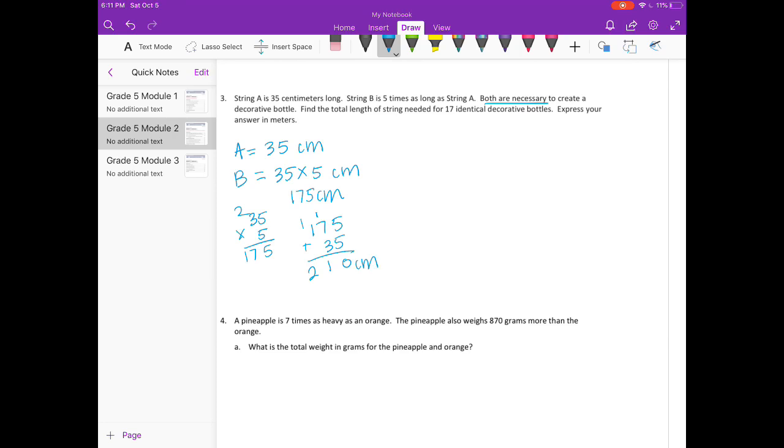To create one decorative bottle, but we need to know the total length of string for 17 identical ones. I'm going to do 210 times 17. Starting with the 7: 7 times 0 is 0, 7 times 1 is 7, 7 times 2 is 14. Put my 0 down. 1 times 0 is 0, 1 times 1 is 1, 1 times 2 is 2. Add it together, we get 3570 centimeters. But it wanted us to put our answer in meters. There are 100 centimeters in one meter, so we need to divide by 100, and we'll get 35.70 hundredths, or you can leave it as 35.7 meters.